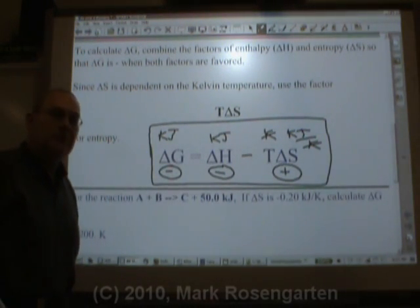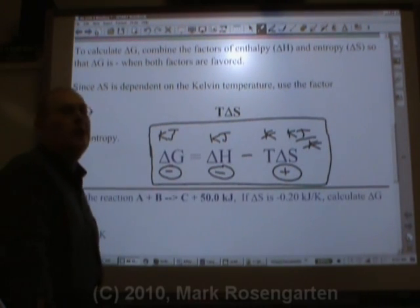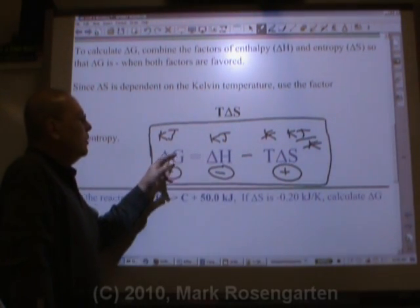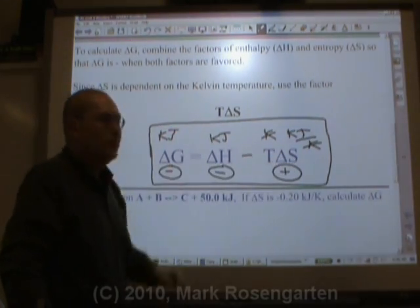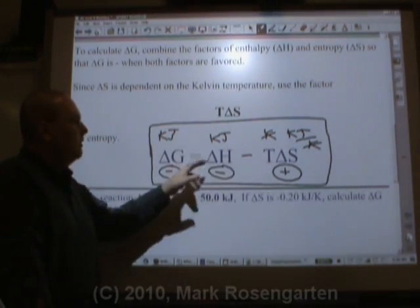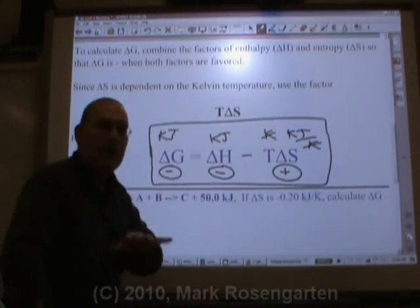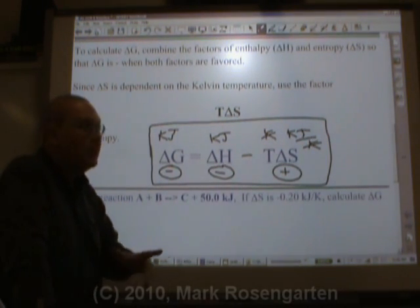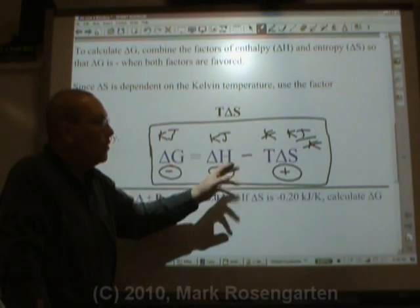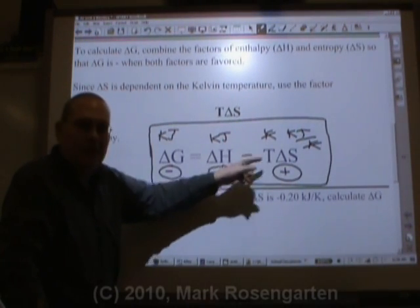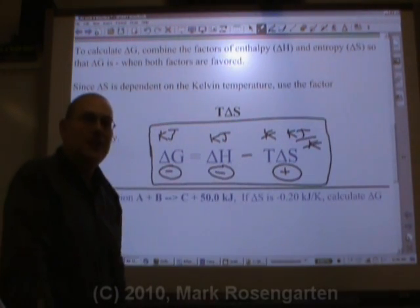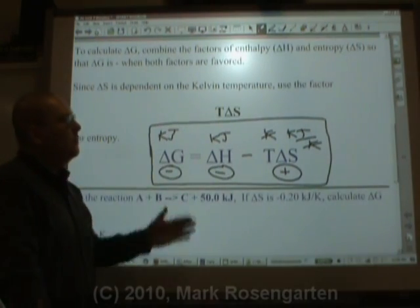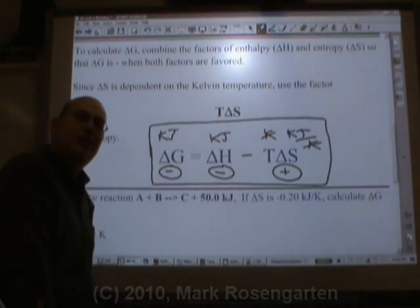One of my very first chemistry students came up with this amazing mnemonic: 'George had two shoes.' Why 'had' instead of 'has'? Because you subtracted the two shoes — he had them and they were subtracted. That's how you remember the formula: delta G equals delta H minus T delta S.